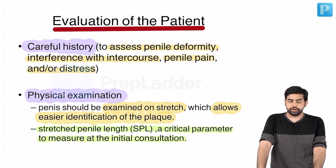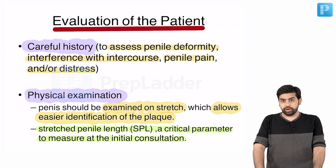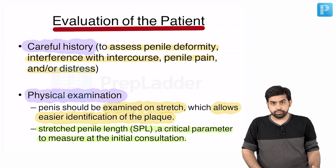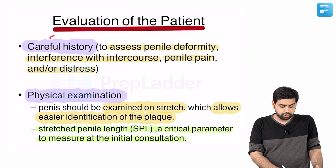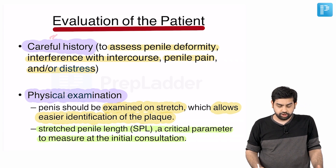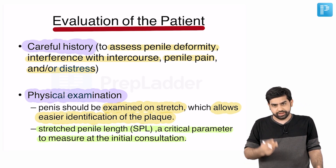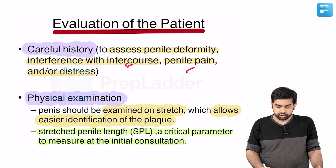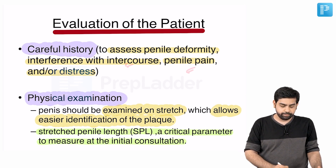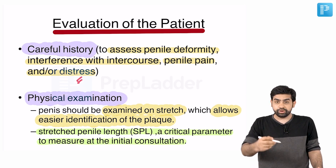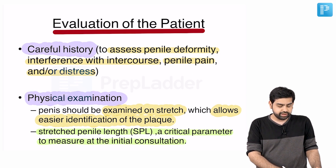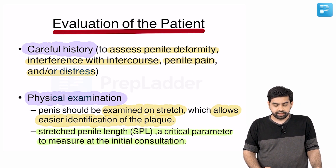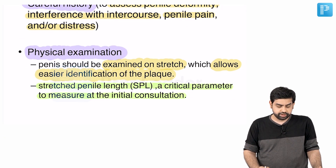If the patient has come to you and told you these are my symptoms, how would you evaluate this particular patient? The first thing is obviously the history — you will ask the patient about penile deformity: how severe it is, how it is interfering with intercourse, is it associated with pain, are you getting some amount of distress — all these particular things you will take in the history.